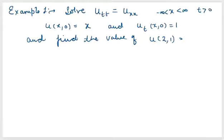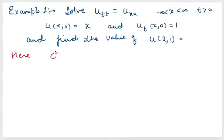Let us start with an example. Solve this wave equation for an infinite string under these conditions: u(x,0) = x, u_t(x,0) = 1, and find u(2,1). First, let us find u(x,t) then substitute x=2, t=1. Comparing with the wave equation, c² = 1, so c = 1.